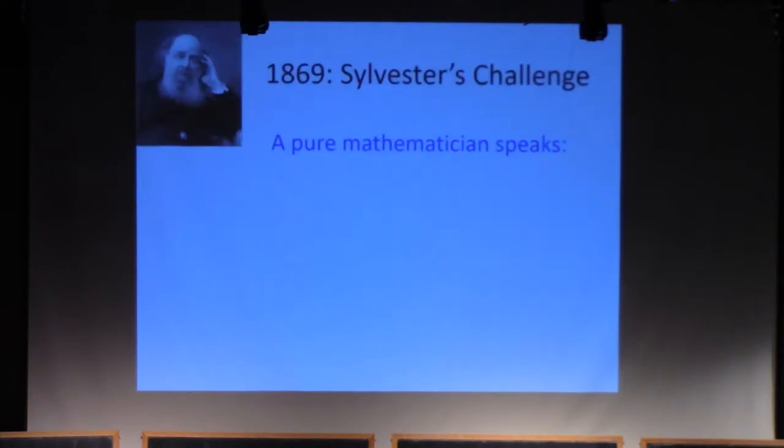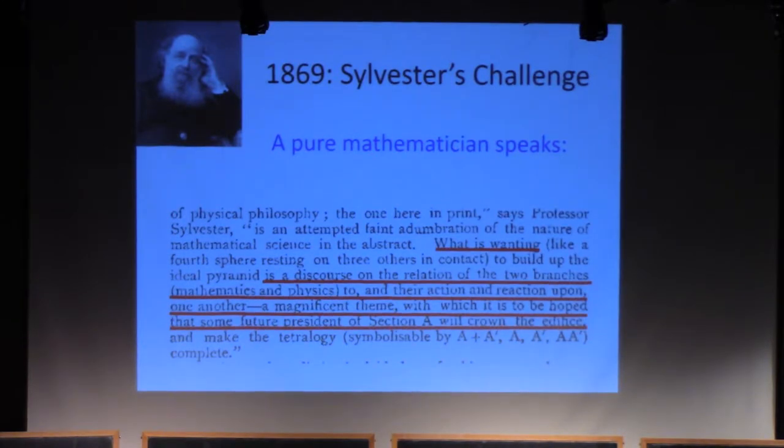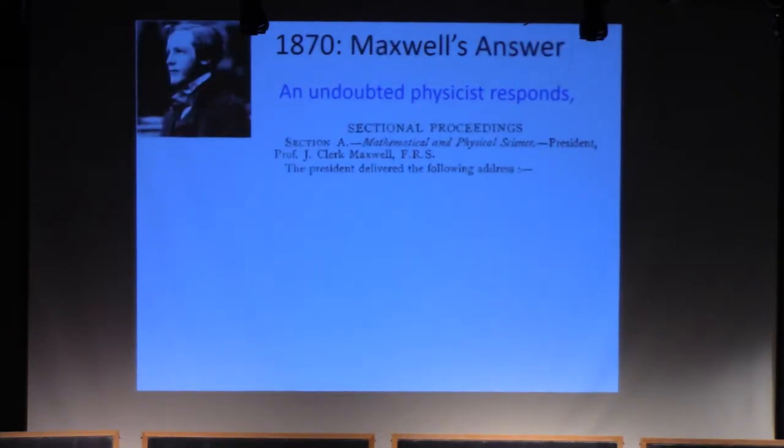For example, if we look at J.J. Sylvester, who's definitely a pure mathematician, as president of the British Association, he said what is wanting is a discourse on the relation of the two branches, mathematics and physics, and their action and reaction upon one another, a magnificent theme. That future president was James Clerk Maxwell, undoubtedly a physicist. I recommend his response. It's very interesting.